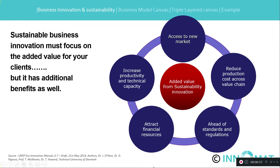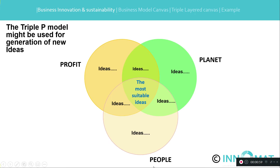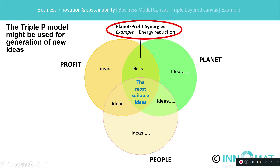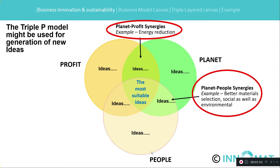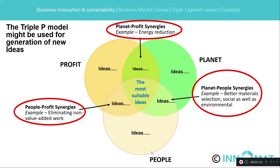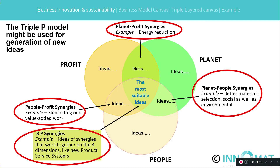The triple P model might be used for a generation of new ideas where synergies of the P's are important — such as energy reduction, which is good for profit as well as the planet; better material selection, which is social as well as environmental; eliminating non-value-added work, which is good for profit and people; or better product-service systems, which is good for planet, profit, and people.